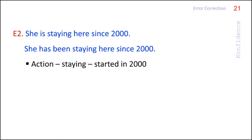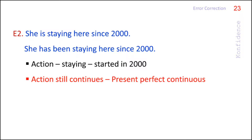In the second example, the action 'staying' started in 2000 and is still continuing in the present time. When we want to express an action that started in the past and is going on at the time of speaking, we must use present perfect continuous tense. Therefore, the right sentence is the second one.